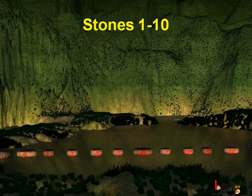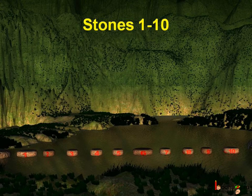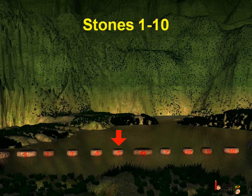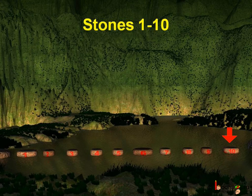Now you all can do simple counting. How did all the animals cross the river? It was by jumping on the stones. Let us count the stones which were used to cross the river: one, two, three, four, five, six, seven, eight, nine, ten. Yes, ten stones were used.